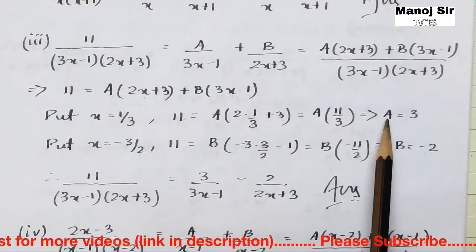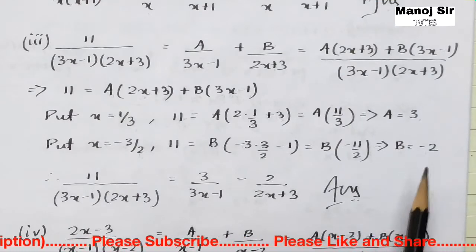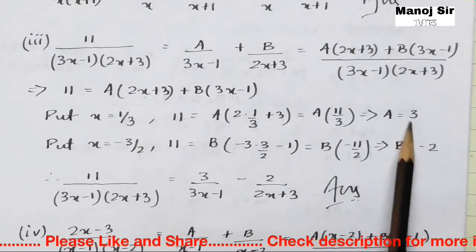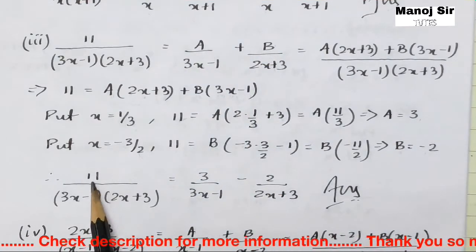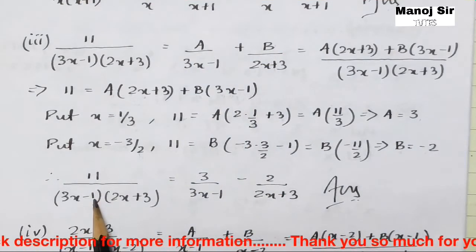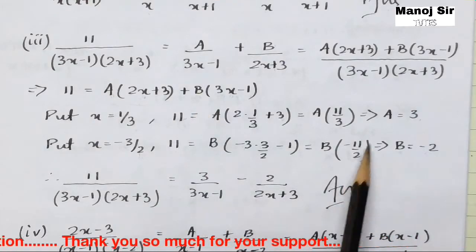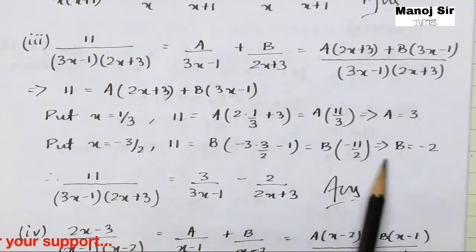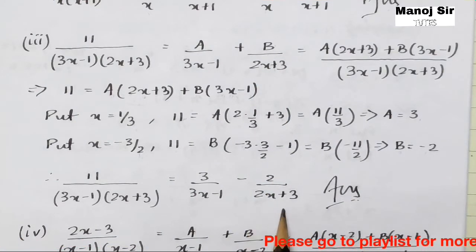We get A = 3 and B = −2. Therefore: 11/((3x−1)(2x+3)) = 3/(3x−1) − 2/(2x+3). This is the final answer for Example 3.